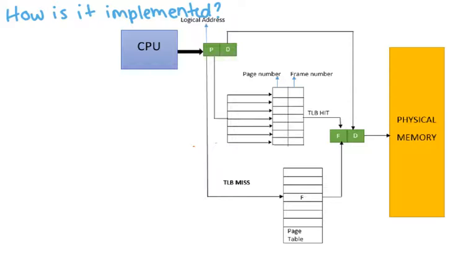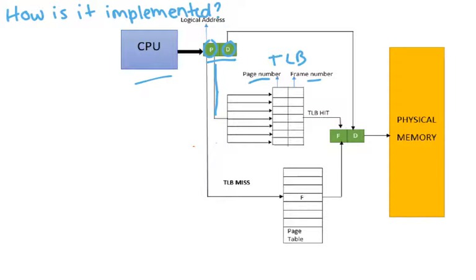So how is this implemented? The CPU generates a logical address — a page number and offset. The page number first goes to the TLB, which holds page numbers and frame numbers. If it finds the page number in the TLB, that's called a hit, and it can use the associated frame number to translate into physical memory.